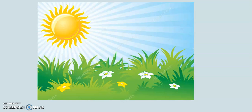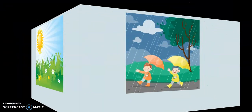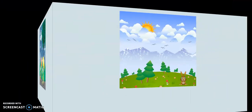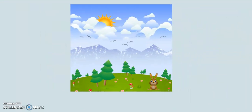What do you see? A sunny day. How's the weather like today? It's a sunny day. What do you see? A rainy day. How's the weather like today? It's a rainy day. What do you see? A cloudy day. How's the weather like today? It's a cloudy day.